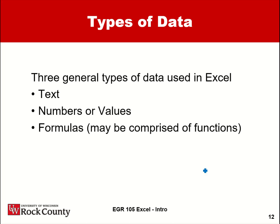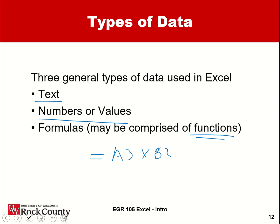There are different types of data you can put into Excel. One is plain text — names, headings, cities, whatever you want. The second is numbers or values, like 123 or 215. The third is formulas — for example, equals A3 times B2 — and formulas can also include functions, which we'll talk about later in the semester.